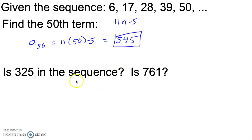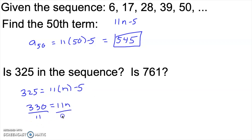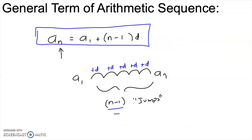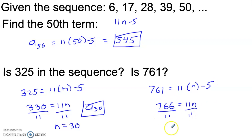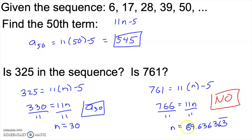What if we wanted to know whether 325 is in this sequence? We set 325 equal to 11 times n minus five and see if n is an integer. We get n equals 30, so 325 is a sub 30 — it is in the sequence. Notice that n must always be an integer. Is 761 in the sequence? Setting 761 equal to 11n minus five gives 69.6363 repeating. So 761 is not in the sequence — there's no integer value of n that gets us from 6 to 761 adding 11 each time.